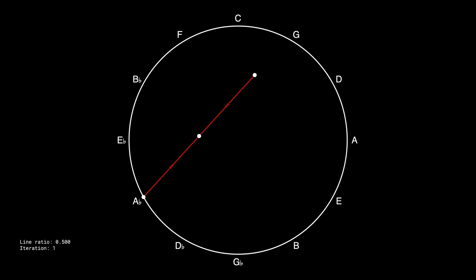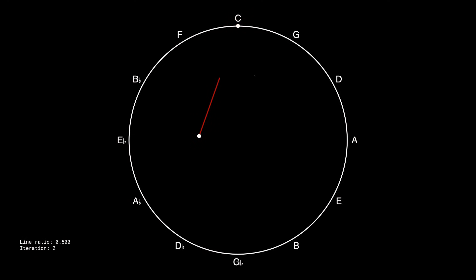Then I repeat this exact same process, starting from the dot I just drew. I randomly pick another one of these three notes, make a line from the most recent dot, find the halfway point, and draw another dot. Now suppose I keep repeating this process over and over. What do you think the resulting plot will look like? Maybe just a triangle filled with points scattered randomly within it? Well, the actual result is something much more surprising.